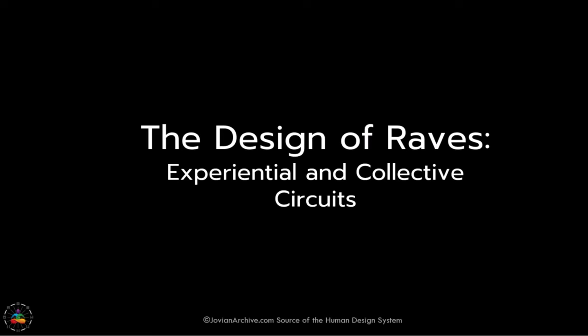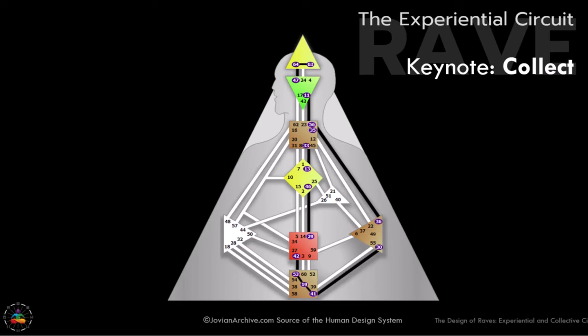It's really important to see how the rest of the circuitry operates when it comes to the design of raves. The experiential circuit with its keynote of collect. So we're going to begin here with what you would know as abstract. Notice how that 19 is between 53 and 41, and how the 63 is connected to that 64. From 2027 and into the future, the experiential circuit of the rave now has this keynote of collect.